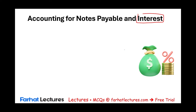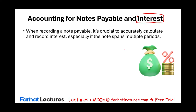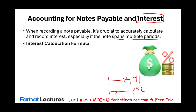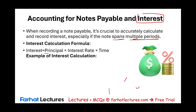When recording a notes payable, it's important to compute the accrued interest — how much interest to record, especially when the note spans multiple periods. The formula is: Principal × Interest Rate × Time. For short-term notes, time is expressed in days or months. If in months, divide by 12. If in days, use 360 or 365 in the denominator.